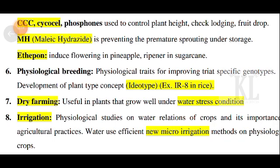In that situation, we can use maleic hydrazide hormones. That is a premature growth retardant — we use it when we store the sprout molecules. We can also use ethephon as an important chemical. We can use flooring, and flooring is a chemical.